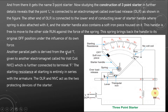Another parallel path is derived from stud 1 to another electromagnet called the no voltage coil (NVC). The NVC is further connected to terminal F. So stud 1 is connected to the no voltage coil, which is connected at terminal F.